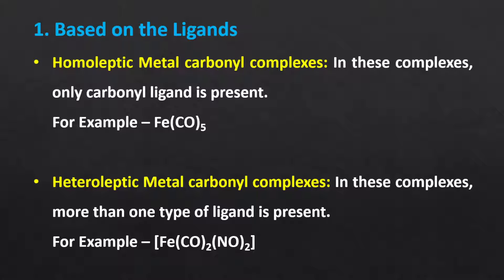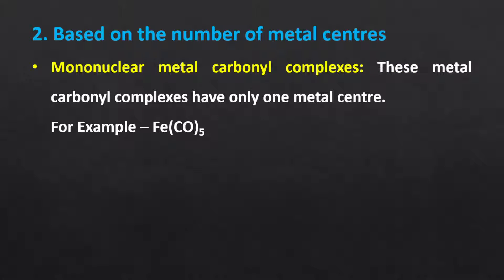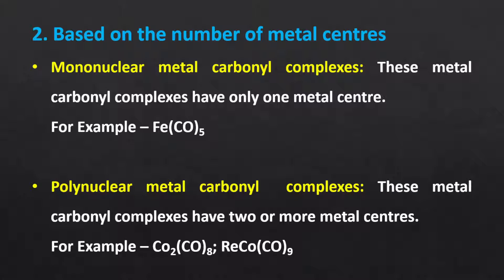The second classification is based on the number of metal centers. We can classify metal carbonyl complexes into two types. The first is mononuclear metal carbonyl complexes, which have only one metal center — for example, iron pentacarbonyl. The second is polynuclear metal carbonyl complexes, which have two or more metal centers — for example, dicobalt octacarbonyl complex and cobalt rhenium nonacarbonyl complex.